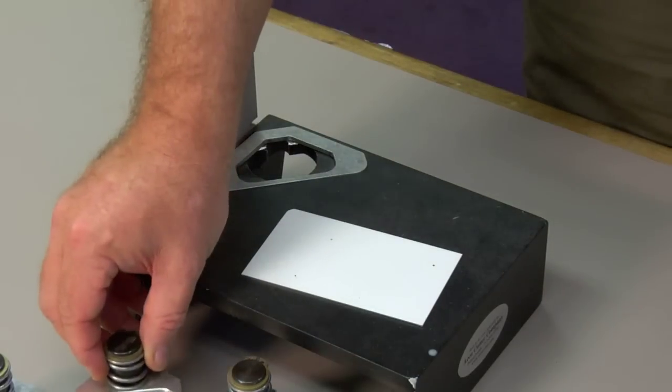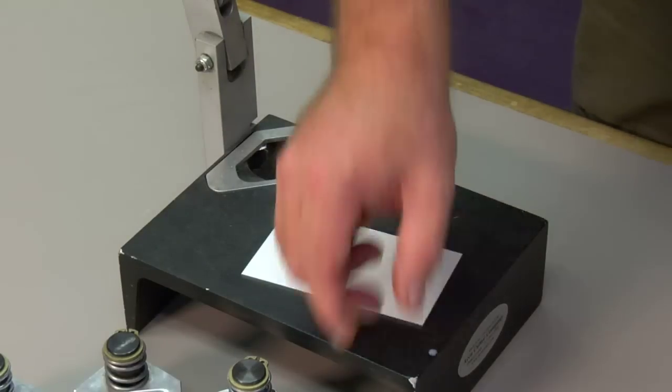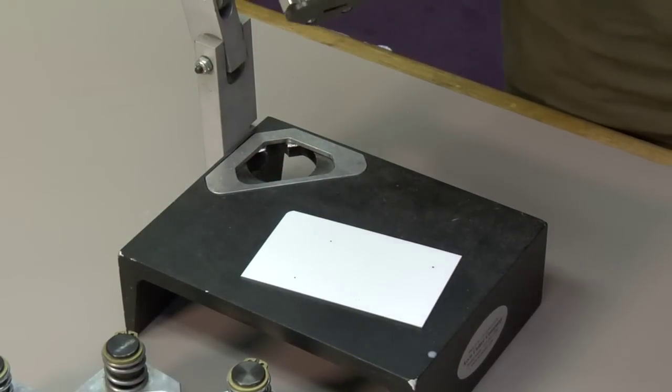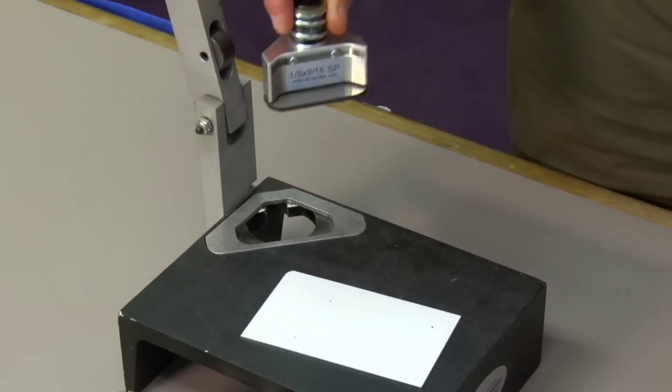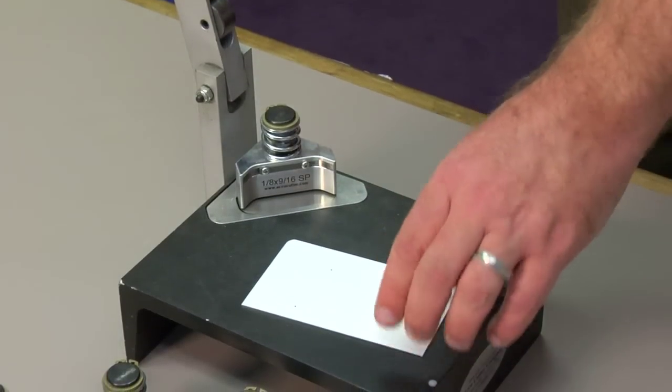When you're finished with that blade you simply take it out and place it wherever you want to store it. Next I want to look at one of the slot cutters. Now this one here will cut a 1/8 by 9/16 slot into the corner of the aluminum. Perfect for if you want to make a luggage tag.